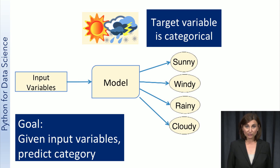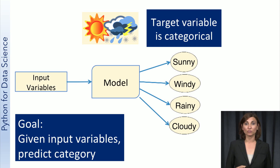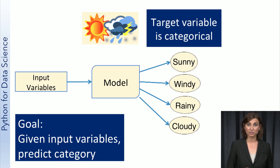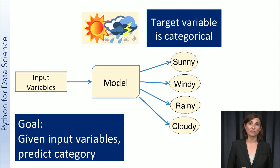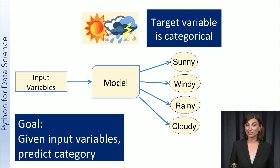So given specific values for temperature, relative humidity, and all those other measurements, the task for the model is to predict if the weather will be sunny, windy, rainy, or cloudy for the day.